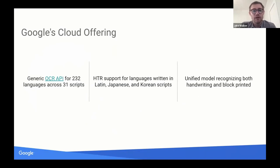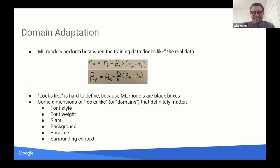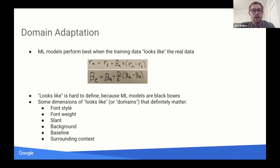This is a generic OCR offering — the goal is that any image with text on it, we ought to be able to extract the text from it. That's not entirely true, because as mentioned, there are a lot of domain-specific things that happen. The more training data you have that looks like your actual production data, the better off you're going to be. It's actually hard to define what a domain is and what makes two things look enough like each other to serve as good replacements in training data. Some dimensions that definitely matter are listed here, though there are probably many more.